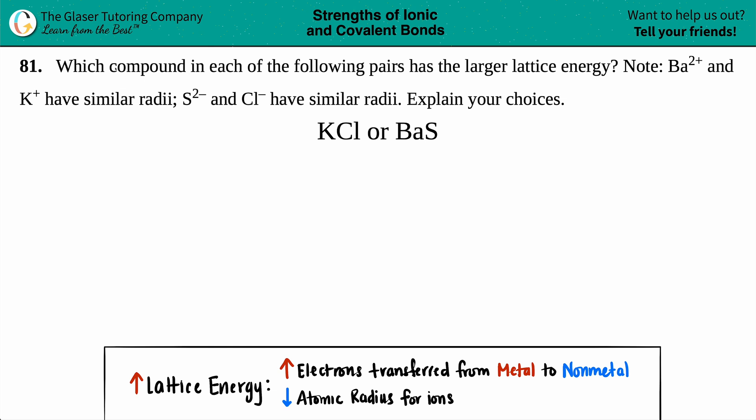Problem 81 asks which compound in each of the following pairs has the larger lattice energy. Note: Ba2+ and K+ have similar radii, and S2- and Cl- have similar radii. We have to explain our choices for KCl or BaS.